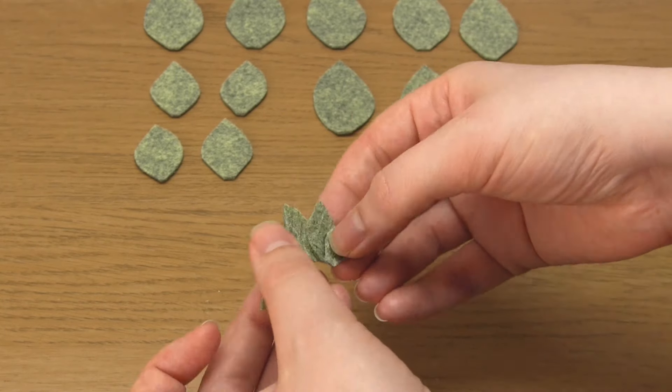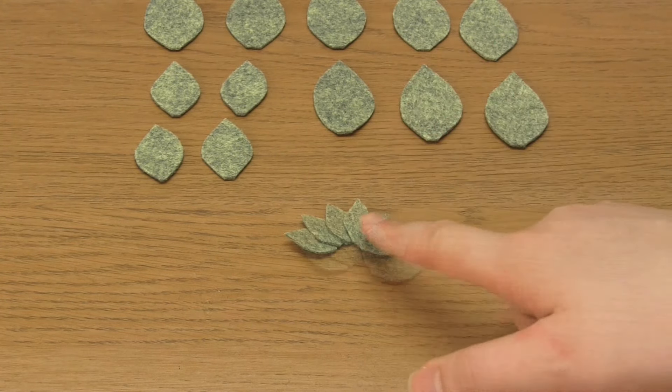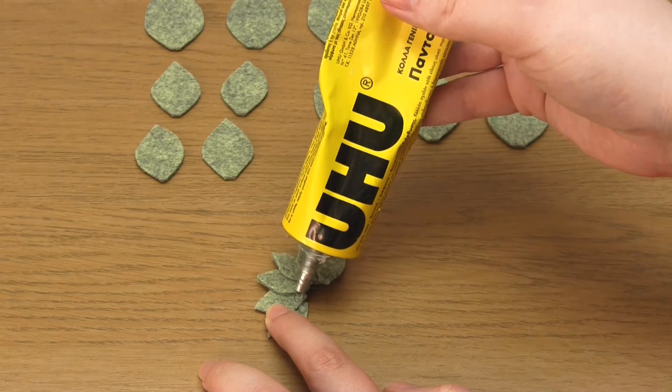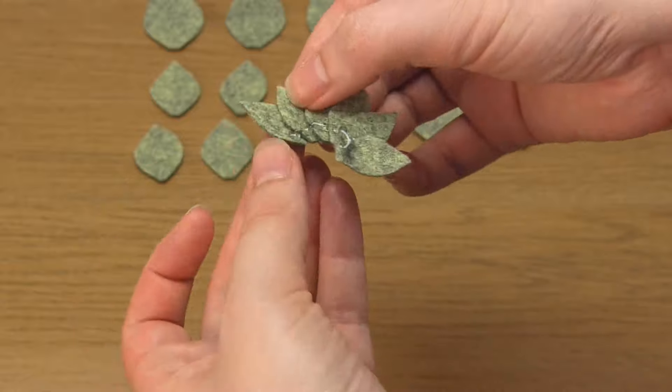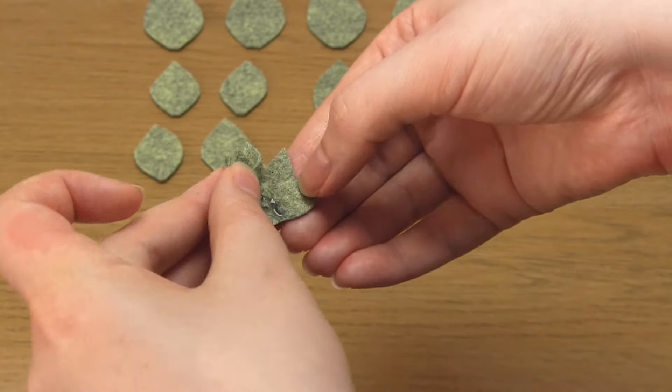Once the glue is dry, apply a line of glue across the base of these leaves. Roll them up from either end into a spiral shape. This will be the centre of the plant.